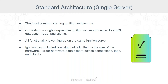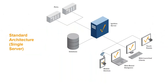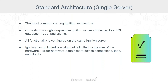The most common starting architecture for Ignition is the standard architecture. This consists of a single on-premise Ignition server connected to a SQL database and thick clients. All the functionality is configured on the same Ignition server. If you're starting small, this is a really easy way to get started.